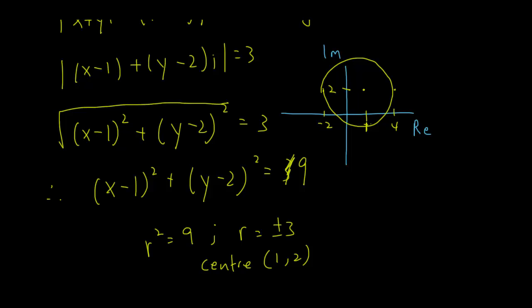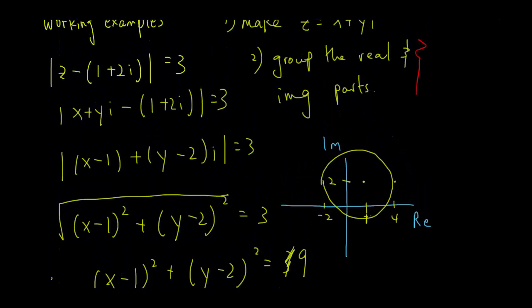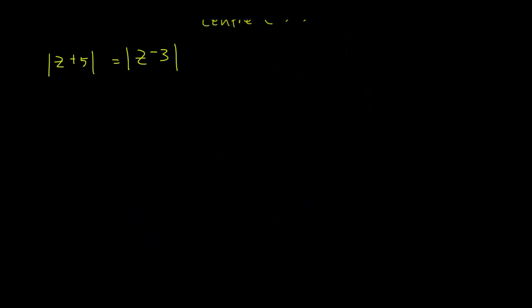Any point on the circumference of this circle will satisfy our original question, which is the modulus of z minus 1 plus 2i equals 3. Any point here will have modulus equal to 3. Now let's do another example.